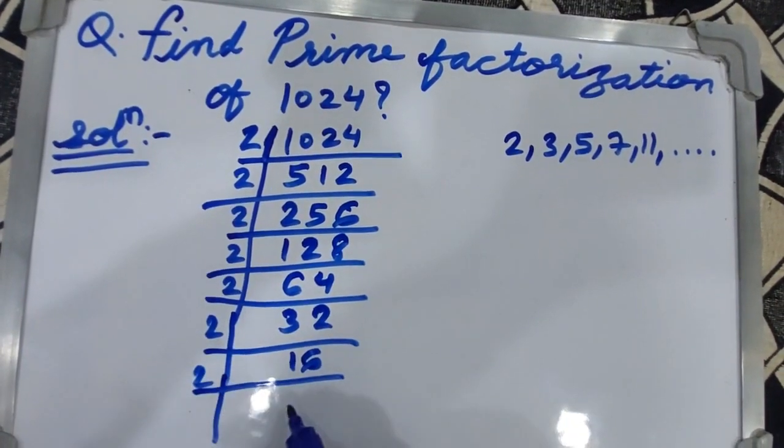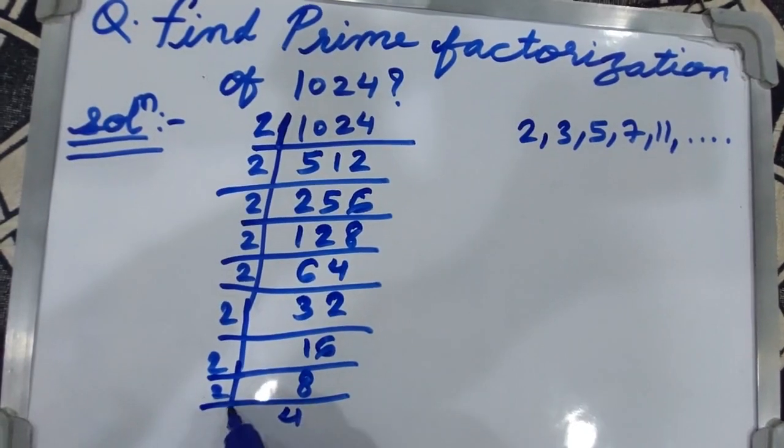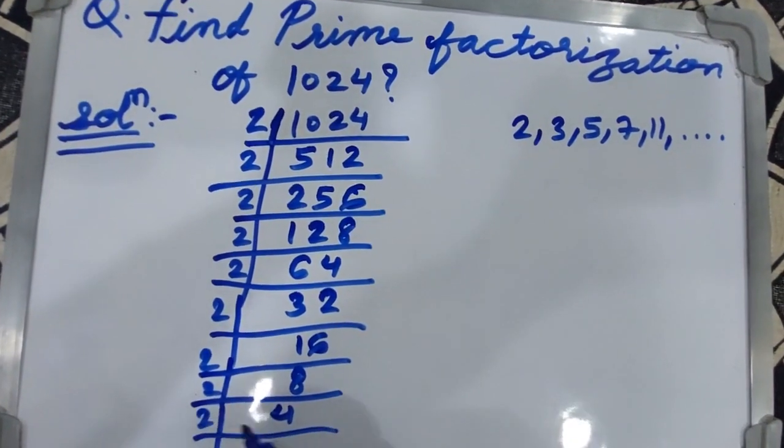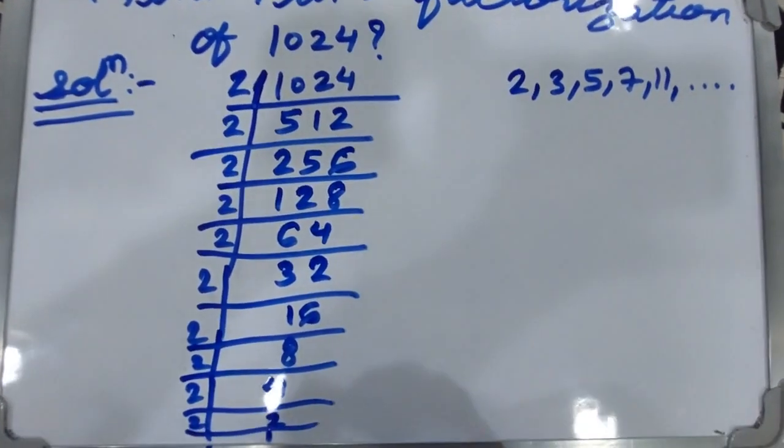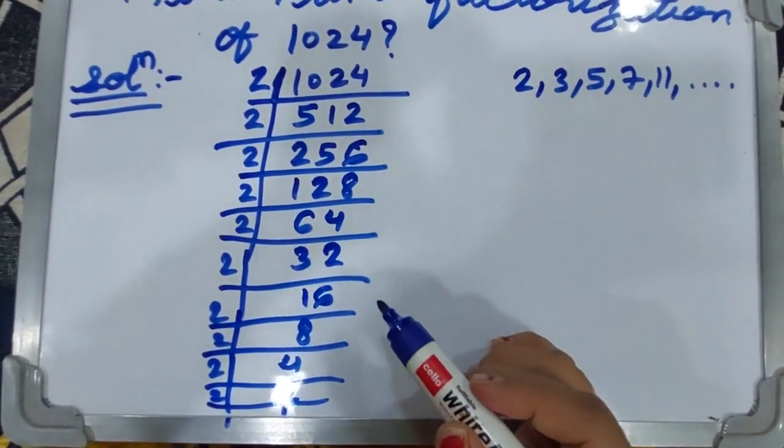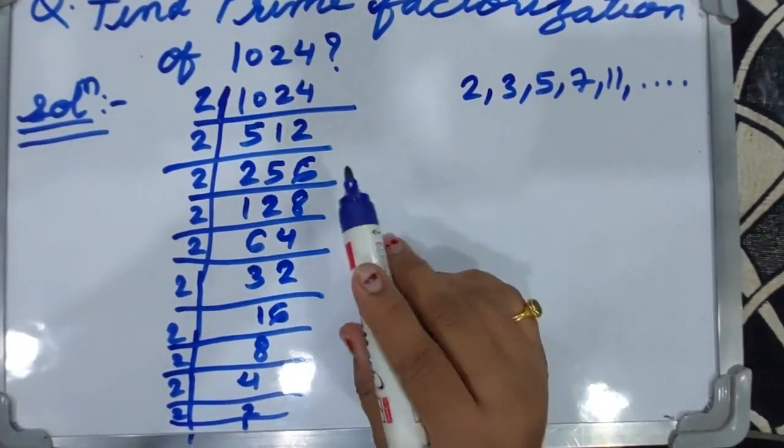Then 2 sixes are 12, then 2 eights are 16, then 2 fours are 8, and then 2 twos are 4, and then 2 ones are 2. It will be completely divisible by 2.